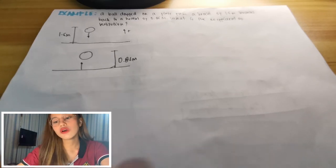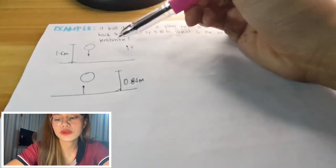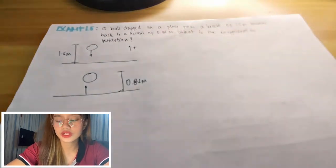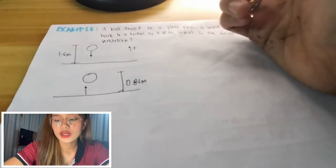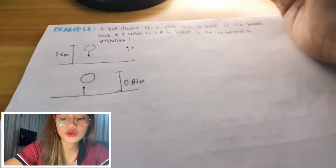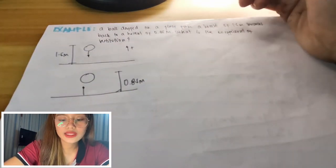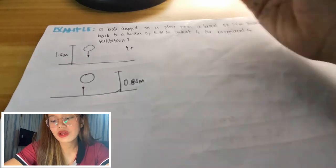So I've drawn a figure here as you can see. So let's say this is the ball. And then, as I said, a ball drops on the floor. So it drops on the floor. The height is 1.5 meters and it bounces back.